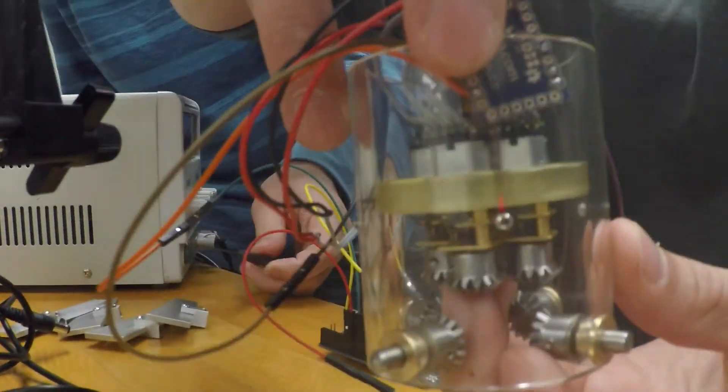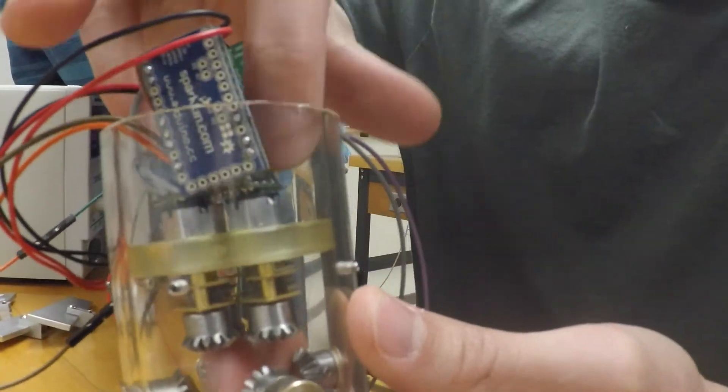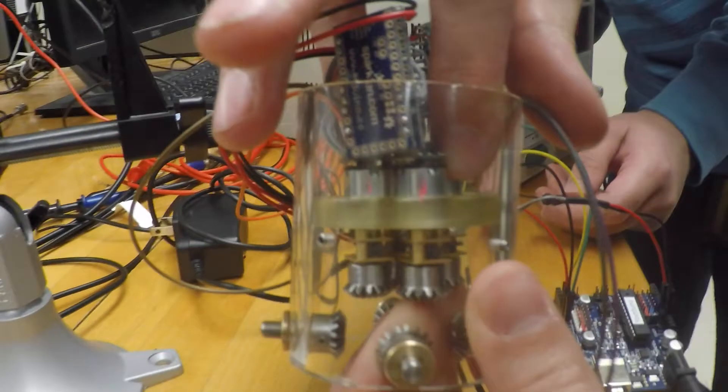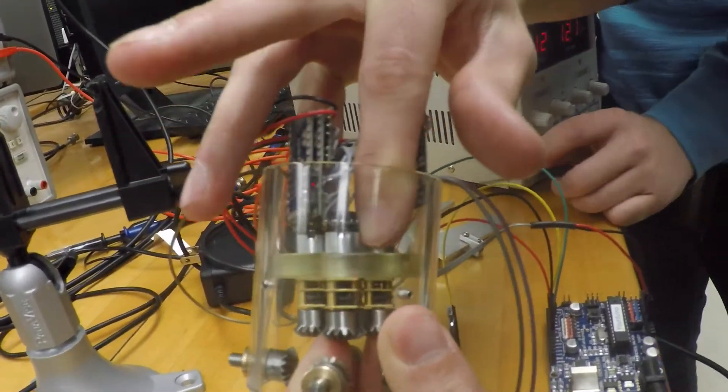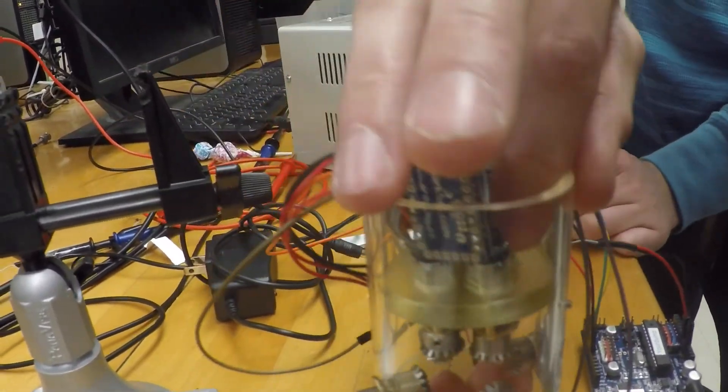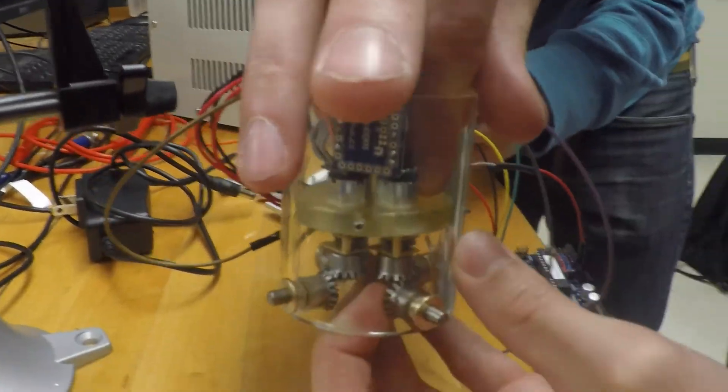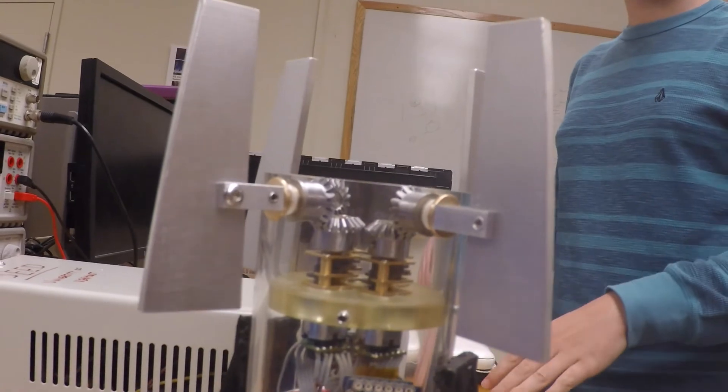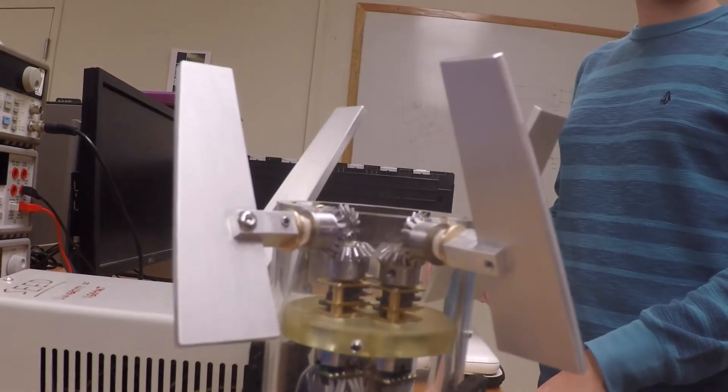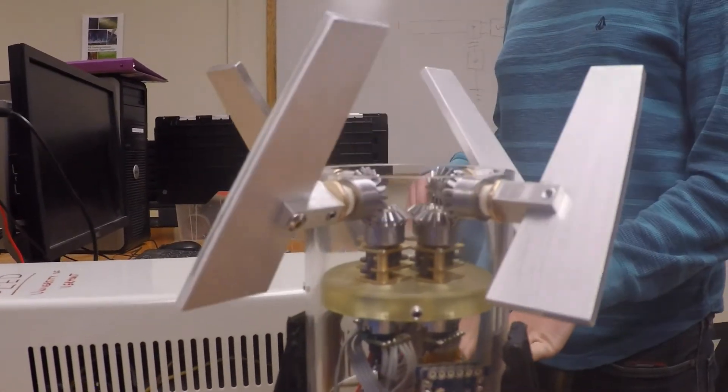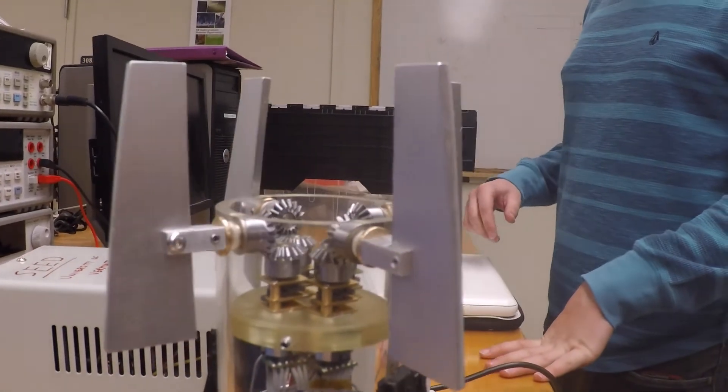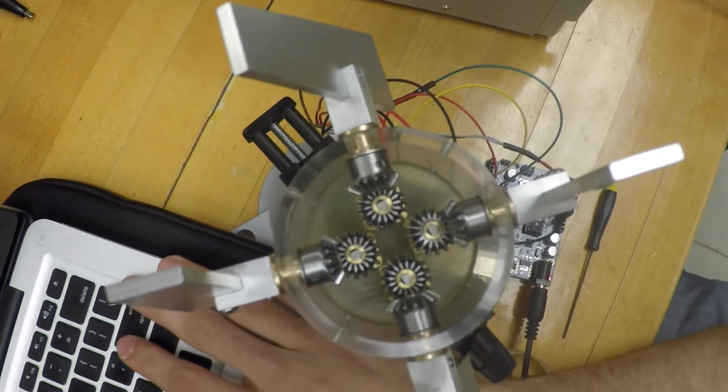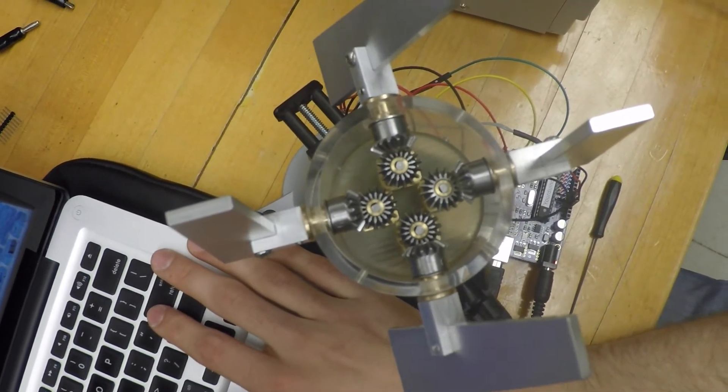The encoders are set to take precedence in the code. They are coded to interrupt all other functions so that no counts of the position are missed. Varying positions alter the pulse width modulation signal sent to the motor driver, slowing down the motor as it approaches its desired position. In case of overshoot, there is a correction movement to ensure accuracy.